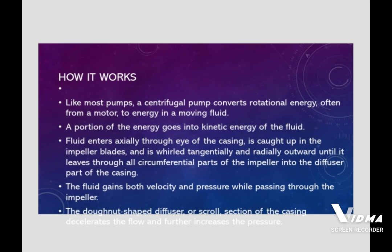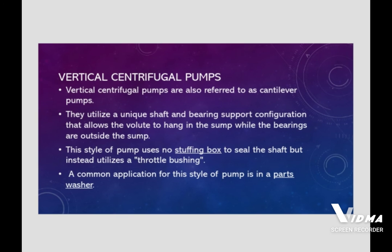Vertical centrifugal pumps are also referred to as cantilever pumps. They utilize a unique shaft and bearing configuration that allows the volute to hang in the sump while the bearings are outside the sump. This style of pump uses no stuffing box to seal the shaft, but instead utilizes a throttle bushing. A common application for this style of pump is in a parts washer.